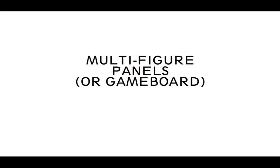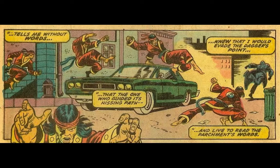Next is the multi-figure panel. Sometimes I call it a game board because it looks like characters moving across a game board. Like the first one, there are variations — it's not a codified term and there are lots of different ways in which it works. This first example again from Master of Kung Fu: essentially we're seeing the Master of Kung Fu character one, two, three, four moving across this panel, jumping over this car and about to catch this bad guy over on the right.